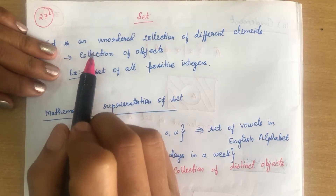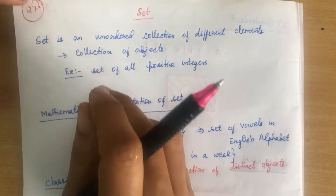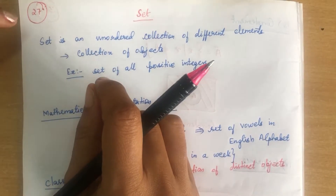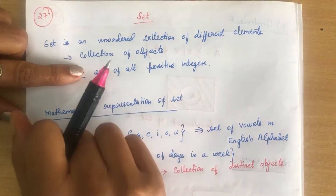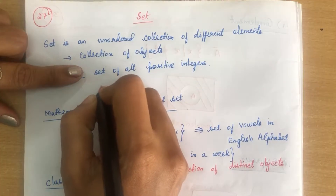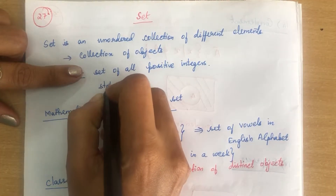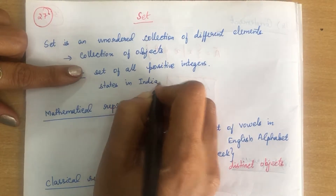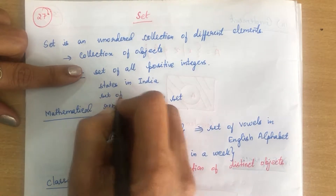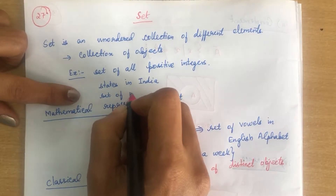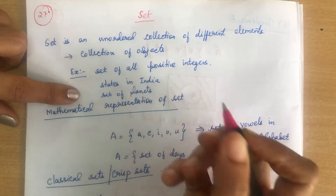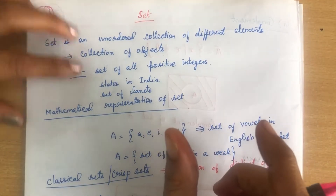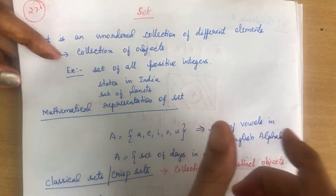What is a set? A set is a collection of objects which share certain characteristics. Examples of sets are: set of all positive integers, set of all states in India, or set of all planets in the solar system. These are all examples of a set. We can write sets using curly braces.